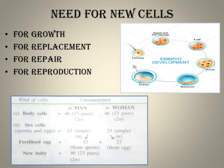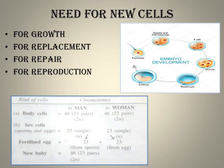The two cells divide to form four cells, then eight cells — known as the morula stage. Then comes the blastocyst stage in humans. The morula is a solid ball with no hollow space inside, while the blastocyst is a hollow ball. Then the embryo is formed. Unless cells divide, that single zygote from which you started your life would never develop into what you are now.